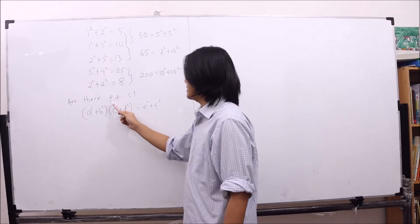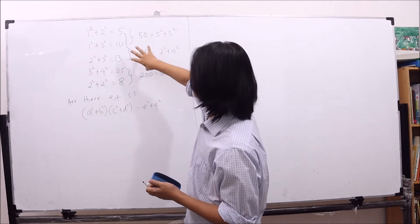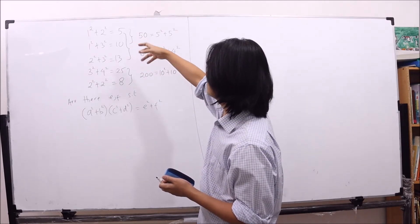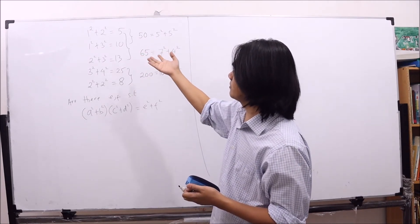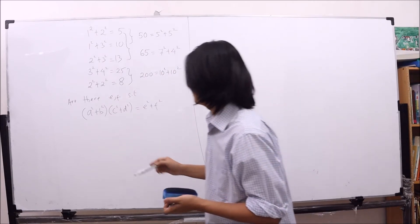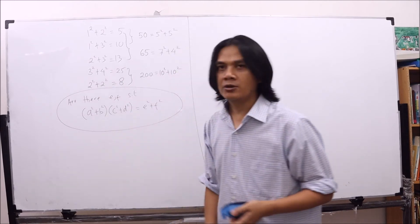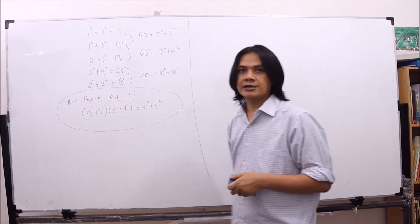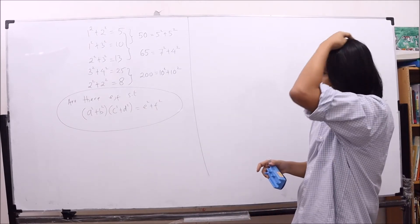If we can always express e and f in terms of a, b, c, d, then the statement that for any two numbers that can be expressed as the sum of two squares, then the product can also be expressed as the sum of two squares. So we're going to try to solve this. We are trying to find e and f such that the left hand side is equal to the right hand side.